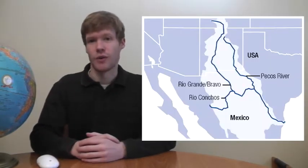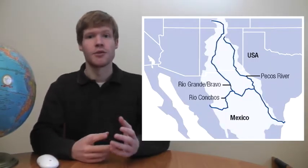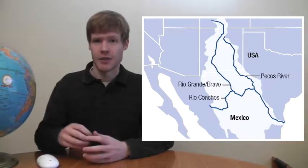River systems in Mexico and Central America, as opposed to South America, tend to be much smaller. The one exception to that is the Rio Grande River, which forms the border between the United States and Mexico.